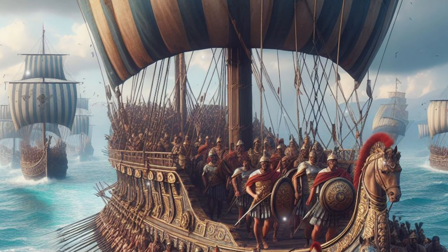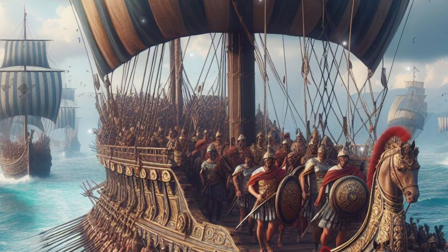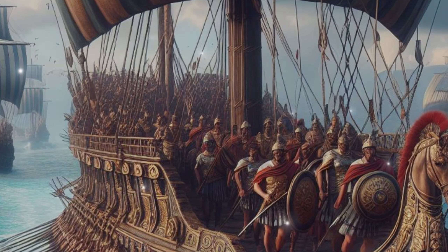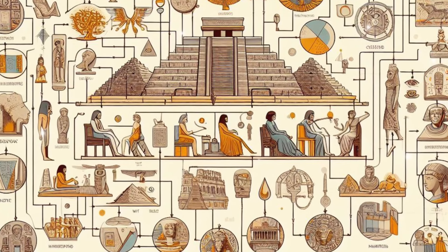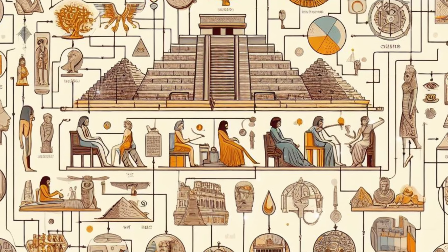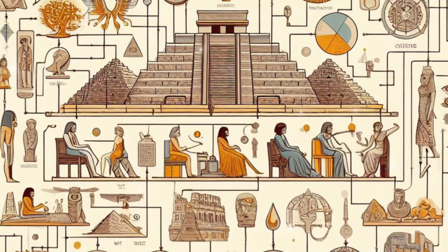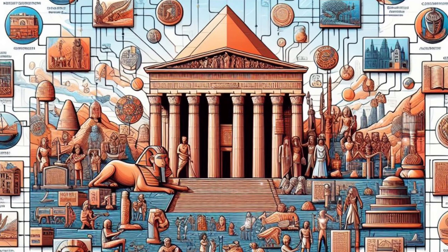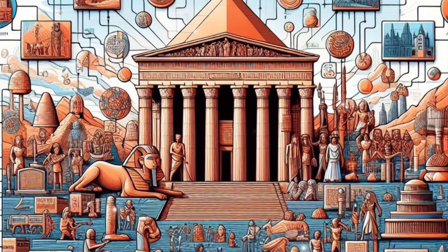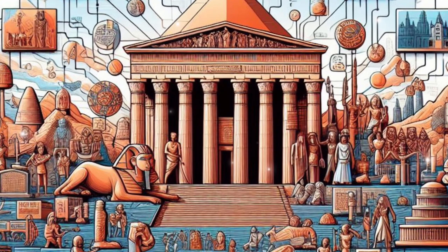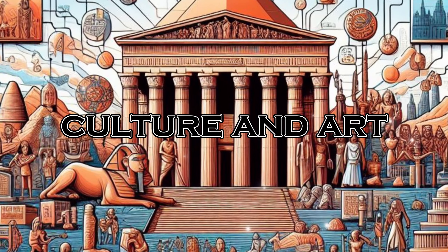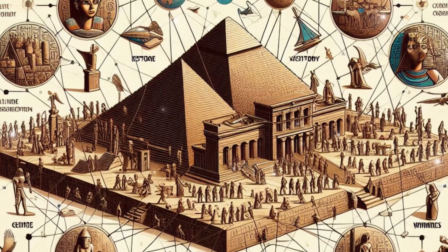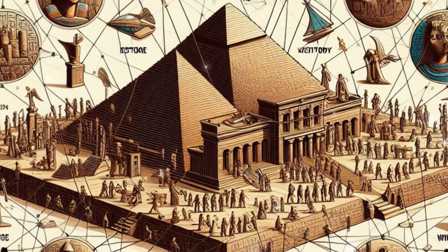The economic structure of ancient Egypt was a slave economy based on a redistribution system. The economy centered on the pharaoh, who owned the land and wealth of the country and distributed resources to temples, nobles, officials, and the army through rewards and taxes, forming a pyramid-style social hierarchy. The ancient Egyptians did not aim at maximizing profits but only valued their own needs, so their trading activities often did not focus on the value of goods, but bartered or used unstable currencies such as grains, metals, and jewelry.